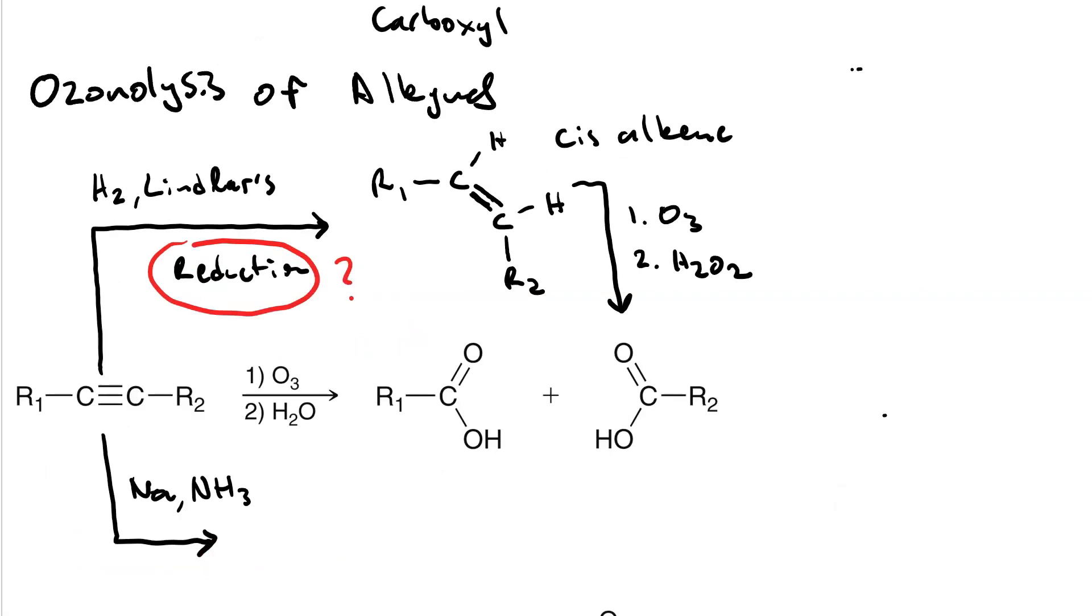We could also use the dissolving metal reduction to get the trans alkene. So if in the first step we react our alkyne with sodium and ammonia, we get the trans alkene. And then we can do ozonolysis with peroxide, and this gives us our pair of carboxylic acids.